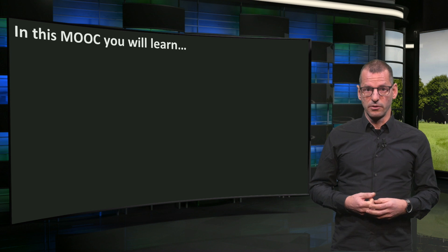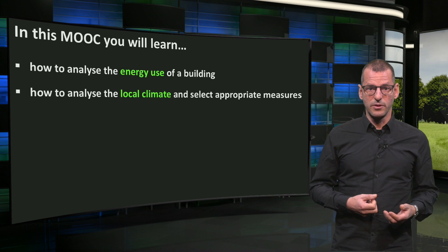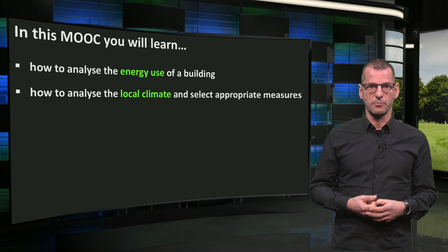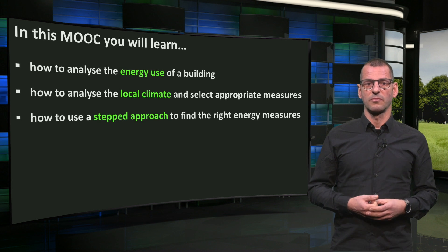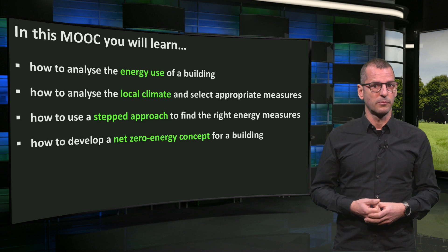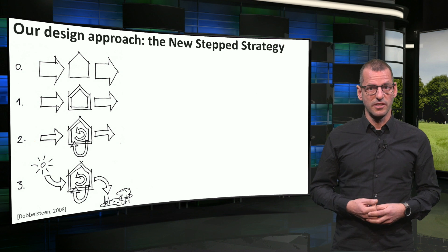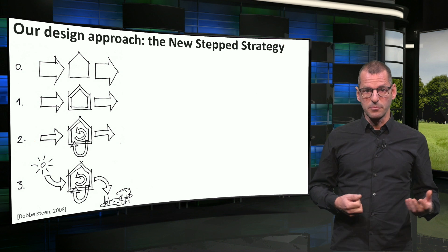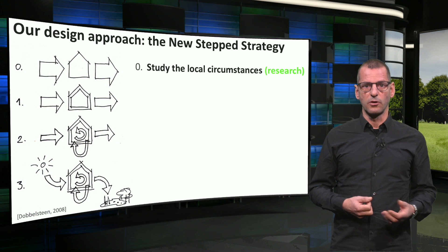In this MOOC you will learn how to analyze energy use of a building, how to analyze the local climate and select appropriate measures, how to use a stepped approach to find the right energy measures, and how to develop a net zero energy concept for a building. Such a concept looks like a scheme that explains the energy and climate system for the building. Our design approach is the new step strategy, as depicted by the sketch below.